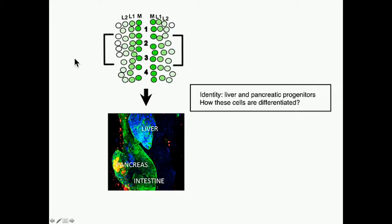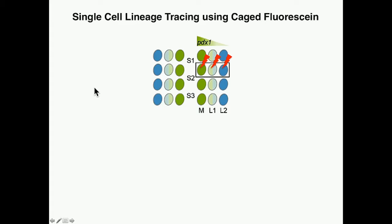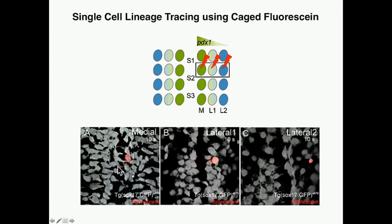We used a single cell lineage tracing technique using a caged fluorescent molecule. We injected the caged fluorescent molecule at the one-cell stage embryo, and uncaged this fluorescent molecule around 6 to 8 somite stage in single endodermal progenitor cells. We successfully labeled individual progenitor cells — a medial cell and lateral one and two cells based upon their medial-lateral position — and traced the fate of each individual endodermal cell.